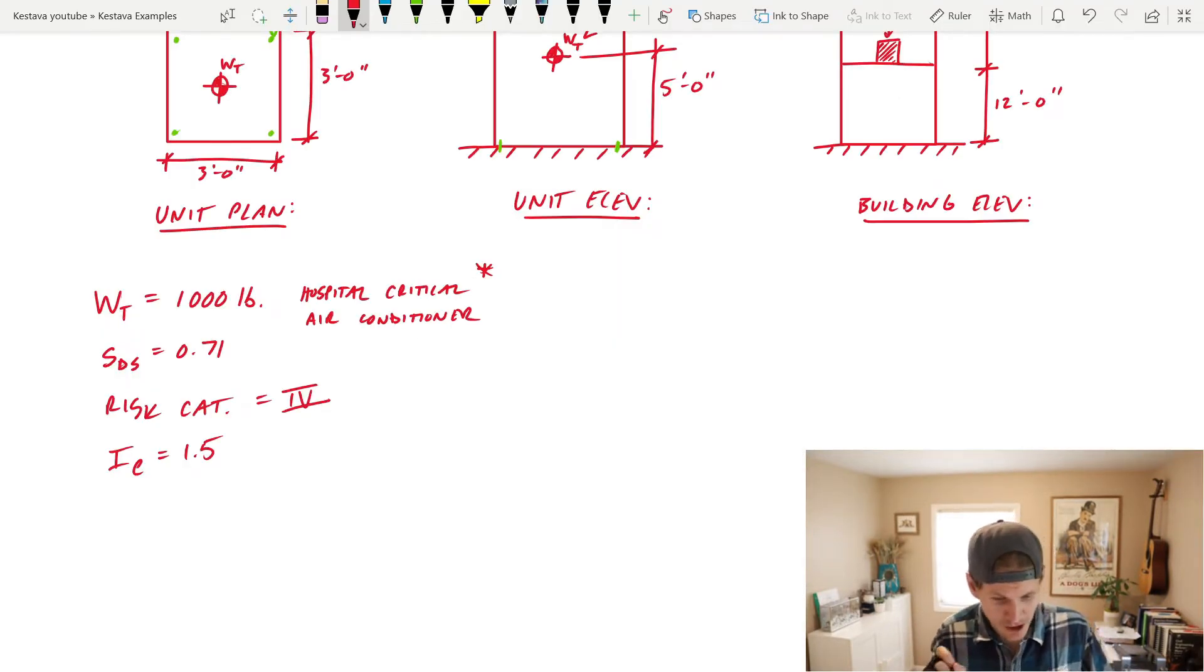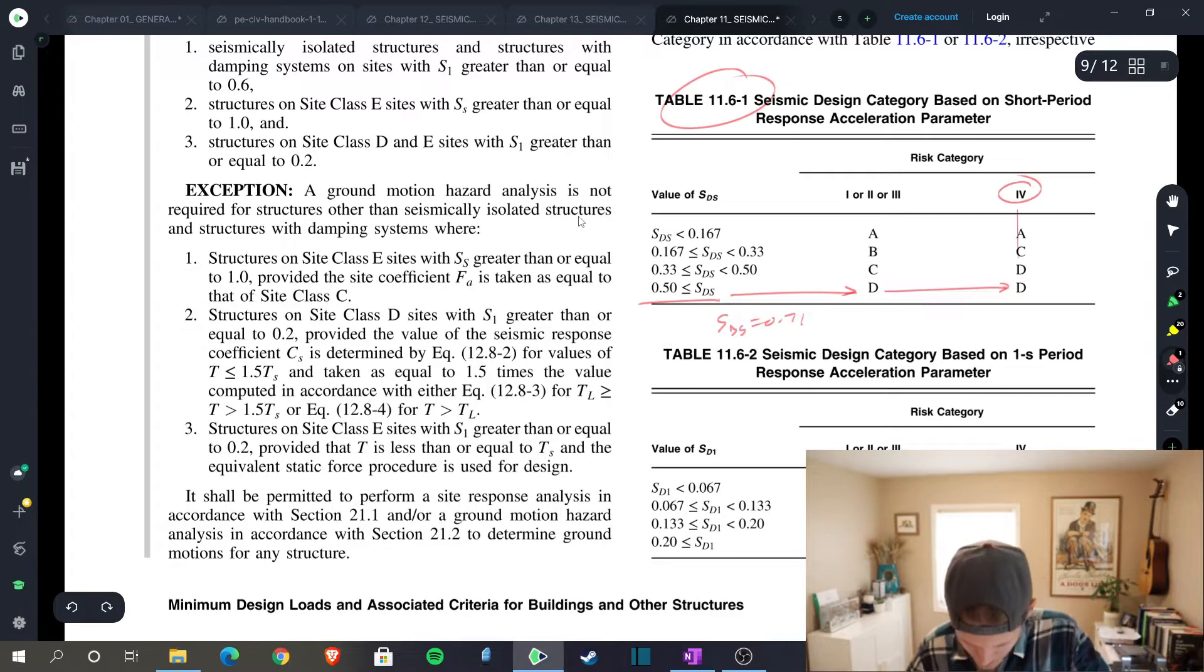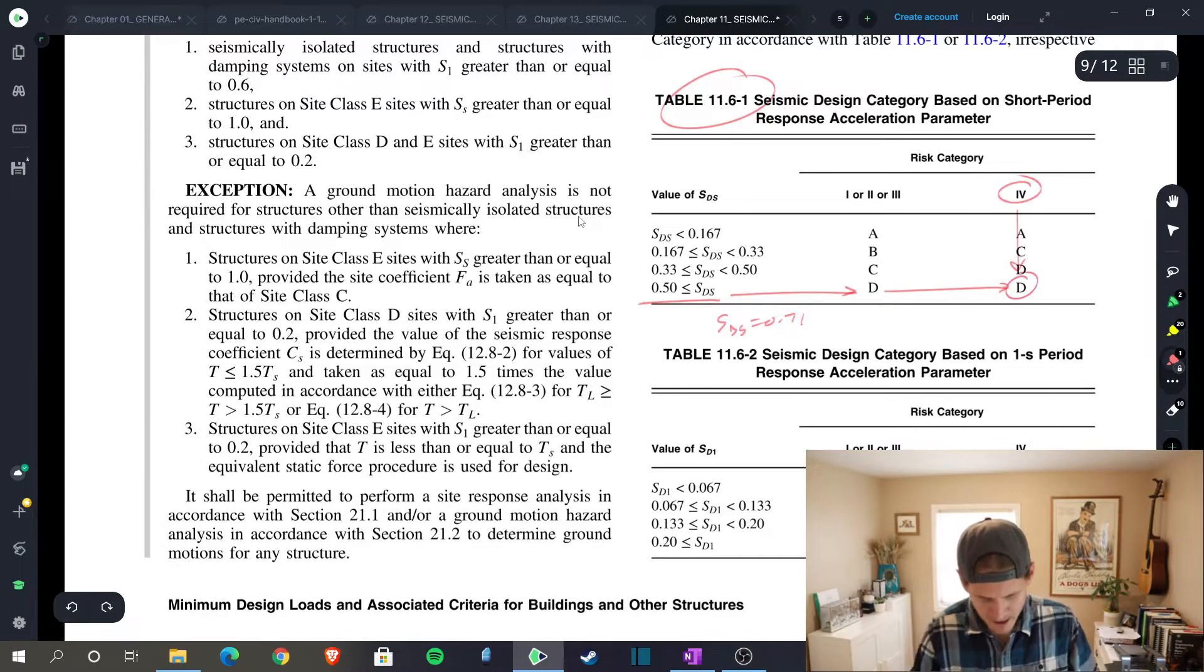Let's now head over to chapter 11 to determine our seismic design category. Table 11.6, we're doing just that. We know we have an SDS equal to 0.71, which means that we fall under this criteria, and we know we've determined a risk category 4, which means that we fall under seismic design category D.